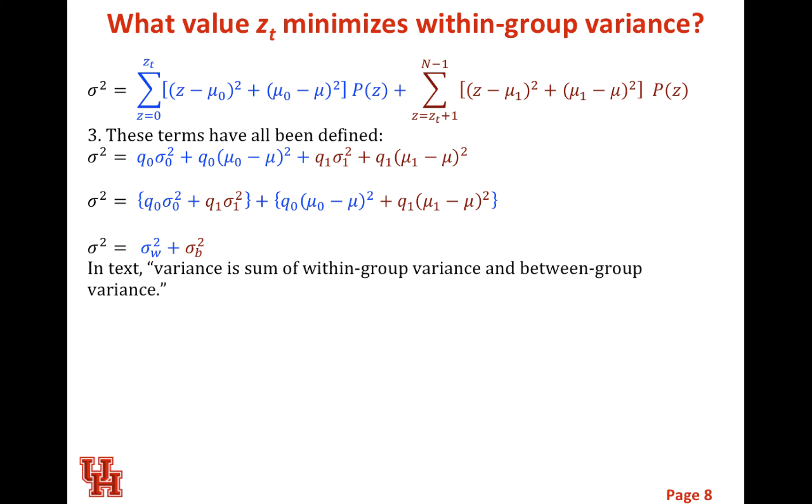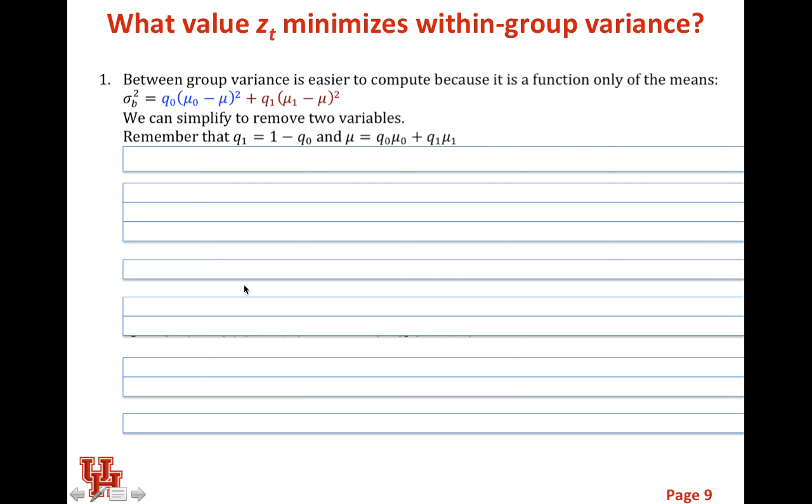Earlier we showed you that we could come up with an expression for this within-group variance, but it required us to calculate the variance for every value of the threshold. So to avoid that, we're going to compute this between-group variance. And I'm just going to show you the math. It's beautiful and it's fun to work through, and you can do that with a pencil and paper. This is from the previous slide. The simplifications that we can do is that Q1, by the law of total probability, the probability of the background plus the probability of the foreground is equal to one. And then we have a definition for the mean. It's just the weighted average of the foreground and the background means.